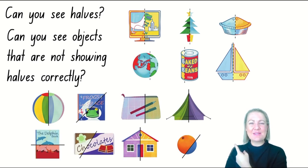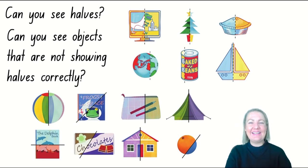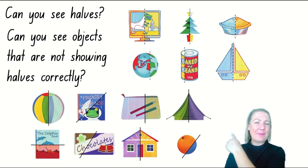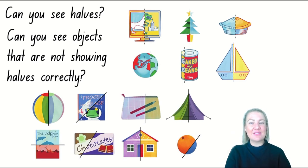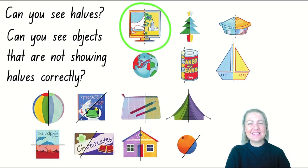The first one I see is a picture of a dinosaur on a television screen. Is it split evenly down the middle? Are both pieces the same? The television with the dinosaur on the screen is split neatly in half, so that picture is showing halves correctly. There's a line of separation down the middle — both sides are equal and shared evenly. I'm going to put a green circle around it to say tick — that's definitely showing halves.